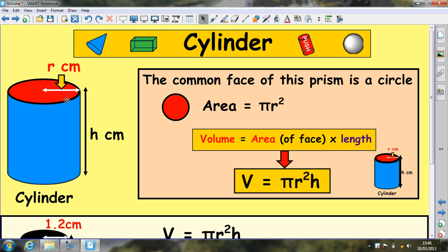This is a prism because you've got a circle at the top, a circle at the bottom, and if you chopped it all the way through you would get more circles. All these circles are parallel and they are congruent, i.e. they fit on top of each other for exactly the same size.